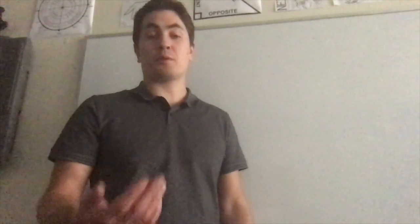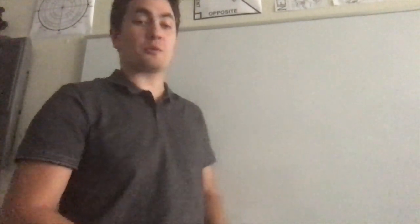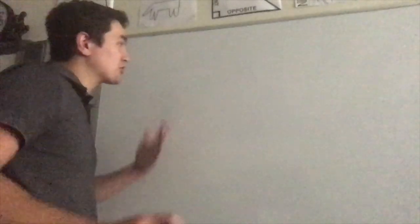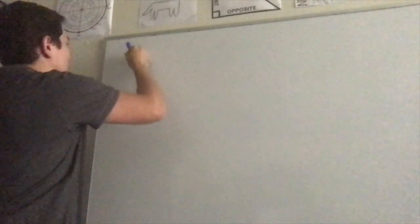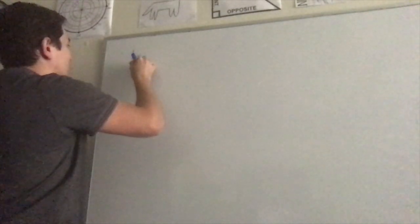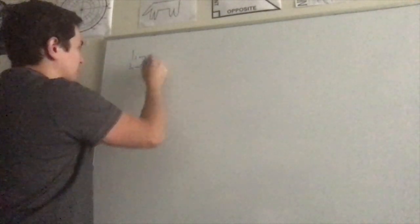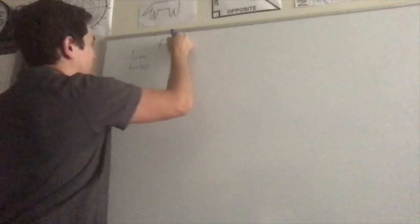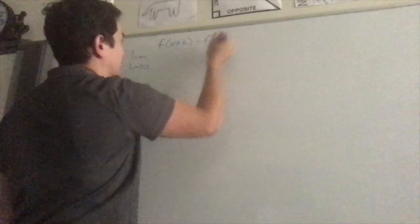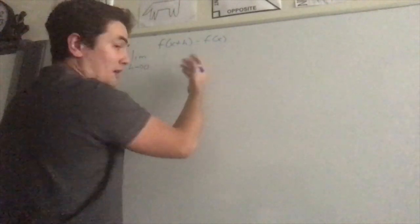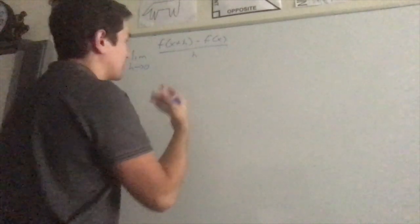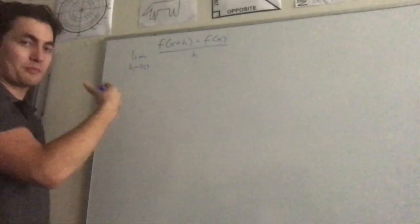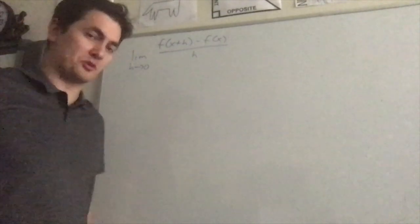Let's do one more cool example using the more famous, more popular version of the formal definition of a derivative. We can rewrite the old formula as the limit as h approaches 0 of f(x + h) minus f(x), all over h. This is by far the most widely used definition of a derivative.